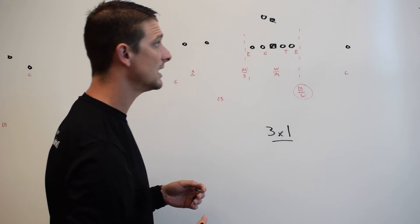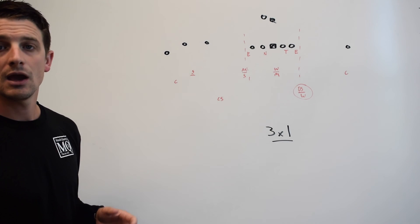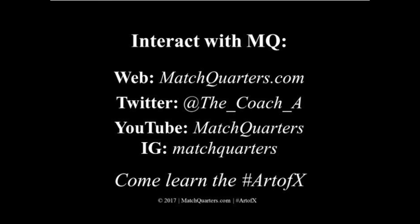So again, we've talked about cover downs, we've talked about overhangs, and we've talked about box players. Again, you can find me on matchquarters.com. You can also find me on Twitter at the underscore coach underscore A. Thank you for your time.